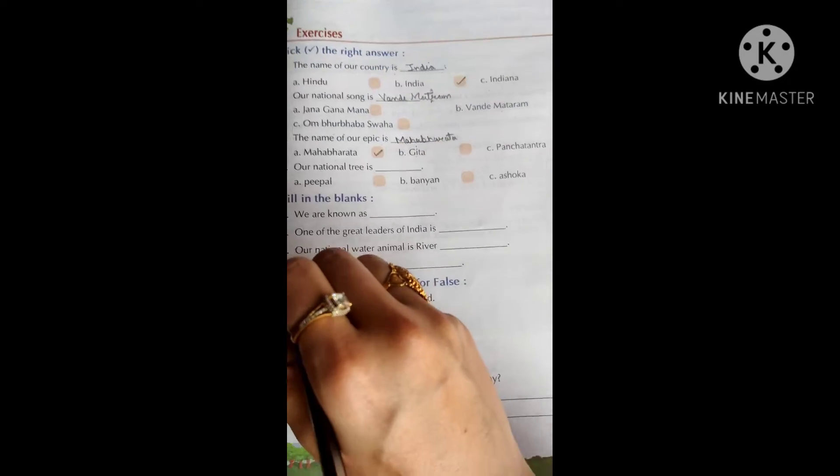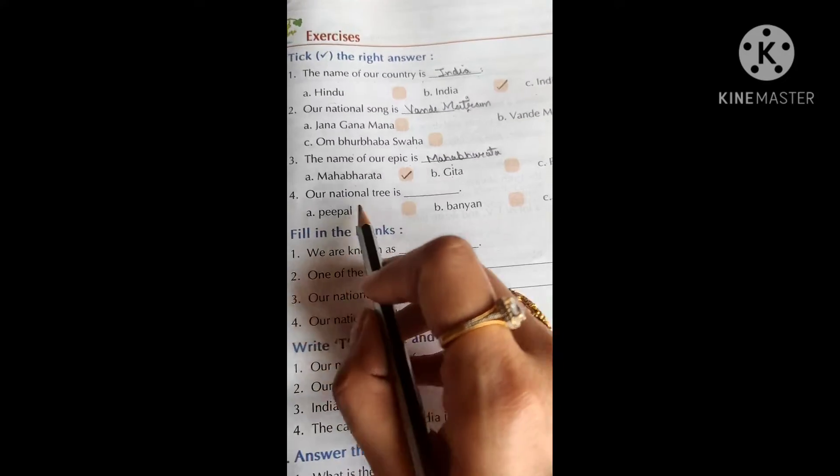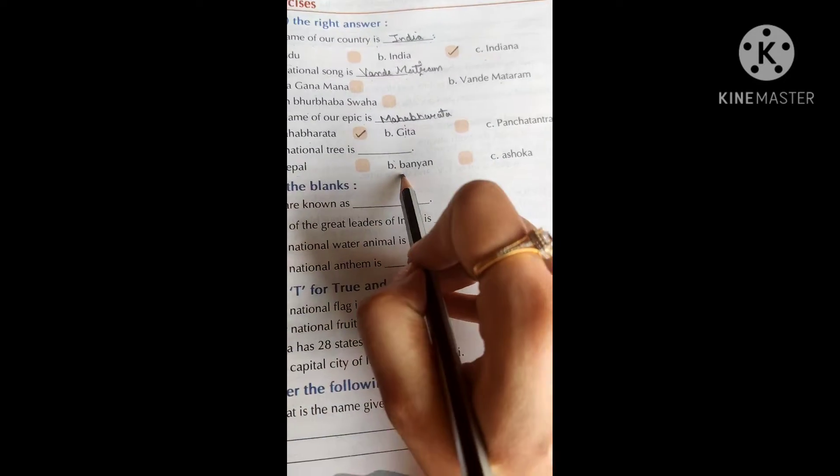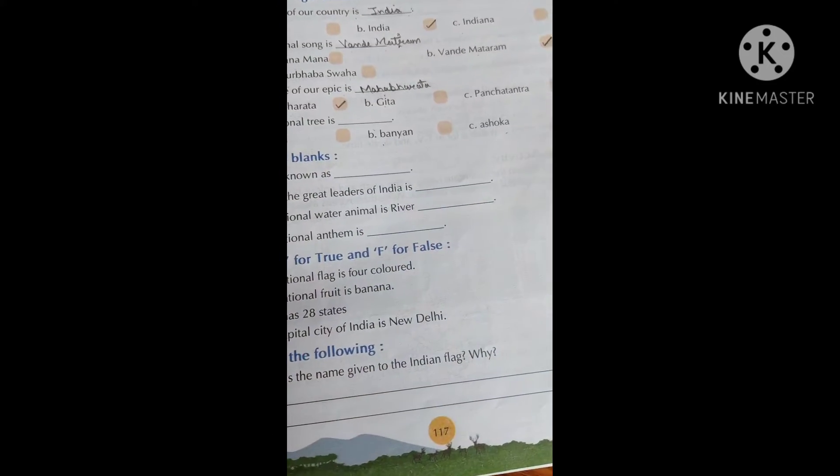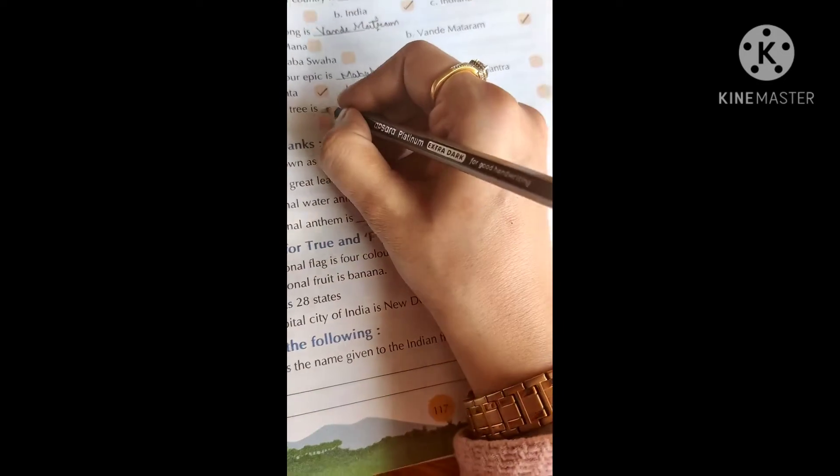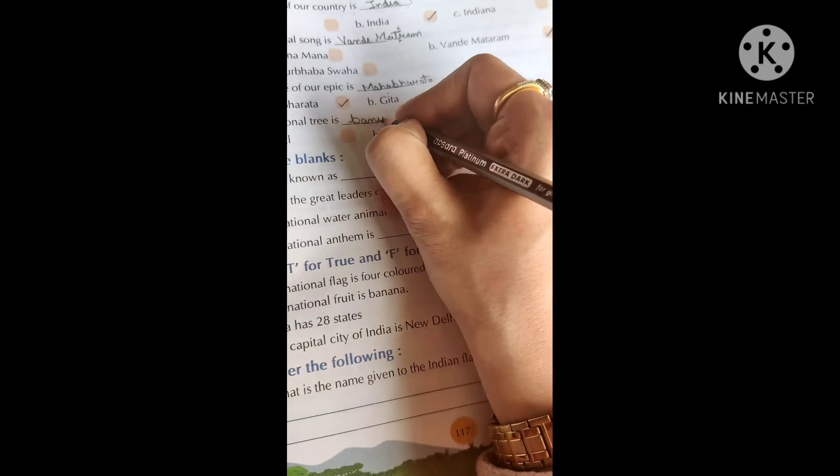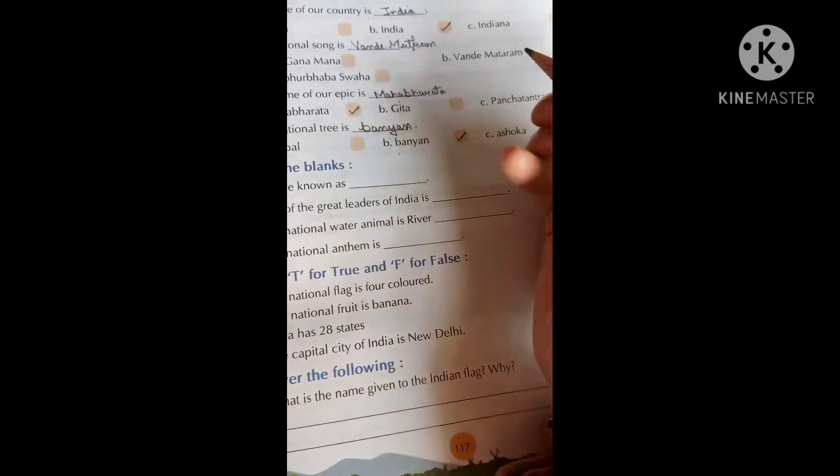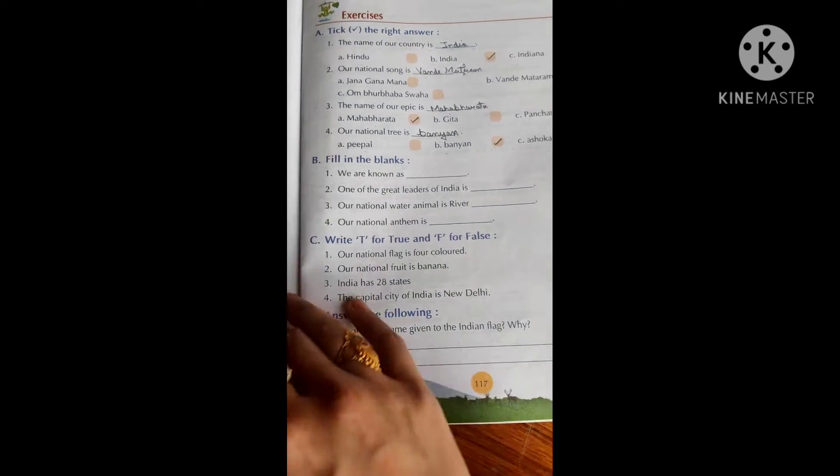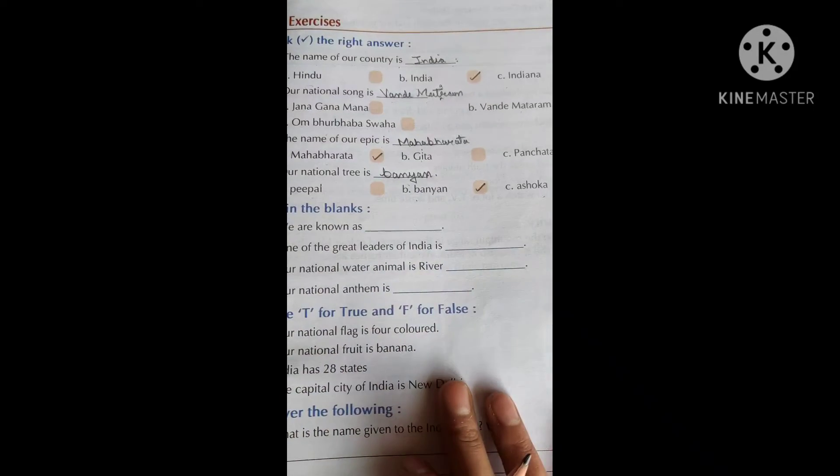Next is our national tree is dash. Which is our national tree? Peepal, Banyan, or Ashoka. Yes, it's Banyan. So our national tree is Banyan. If you have seen the video that I sent yesterday, then you must know the answers of this.